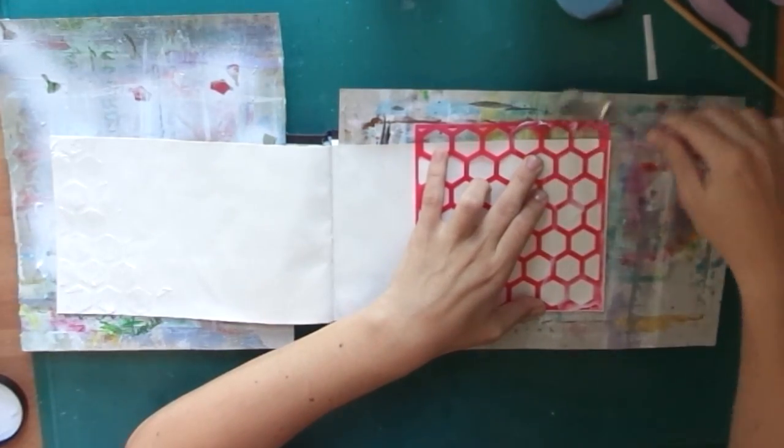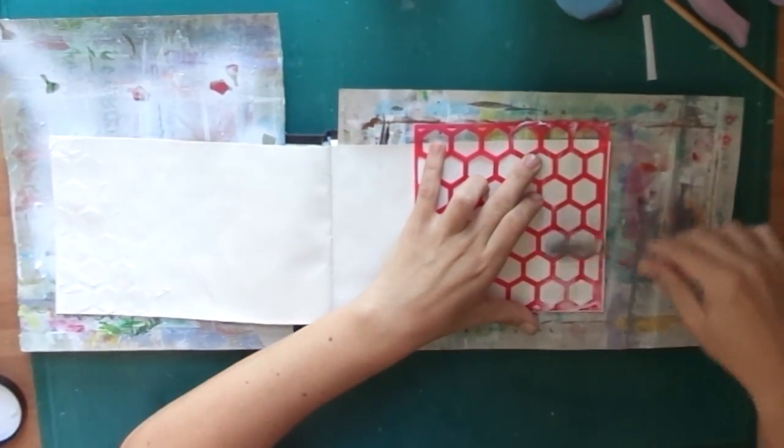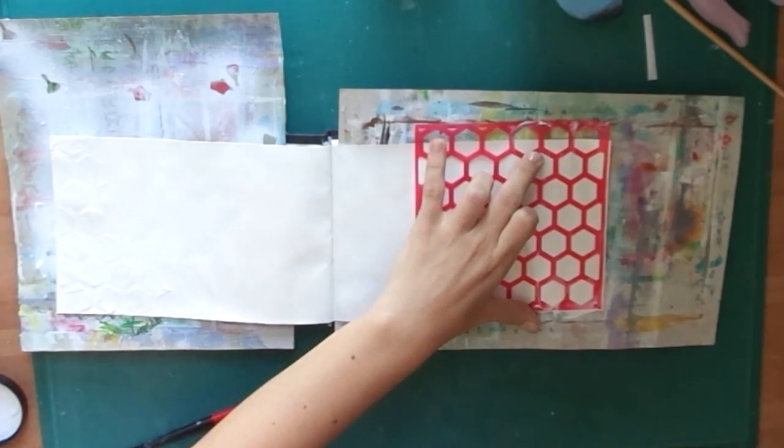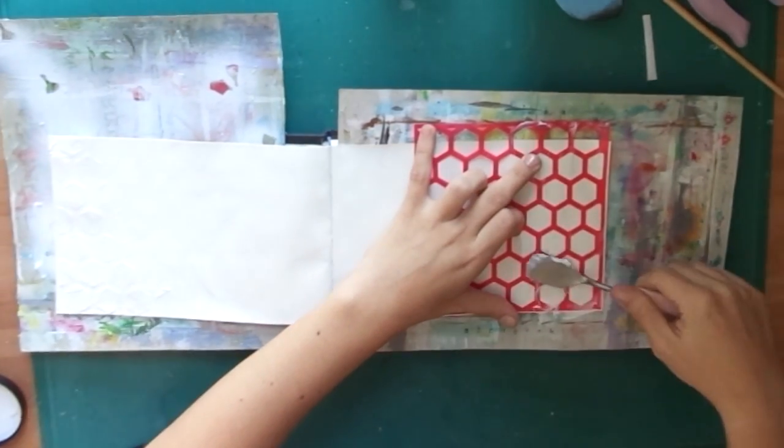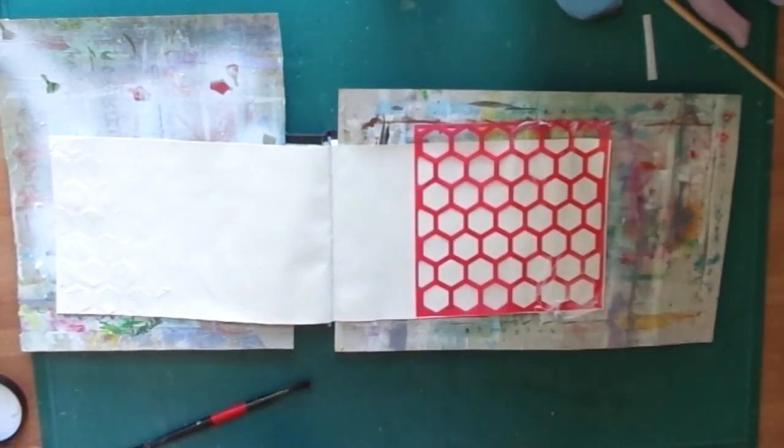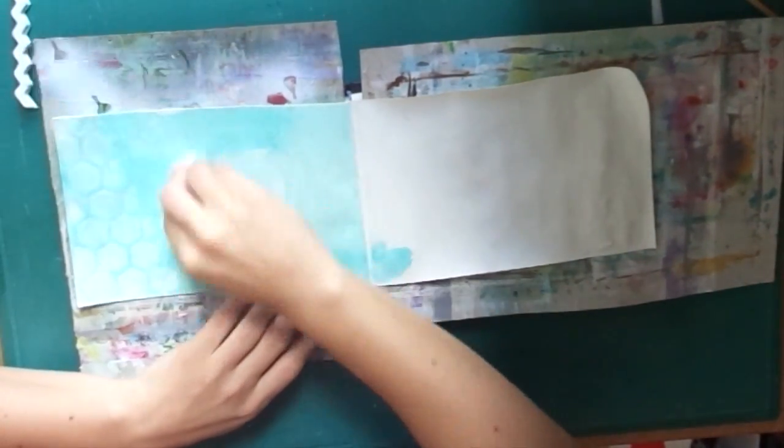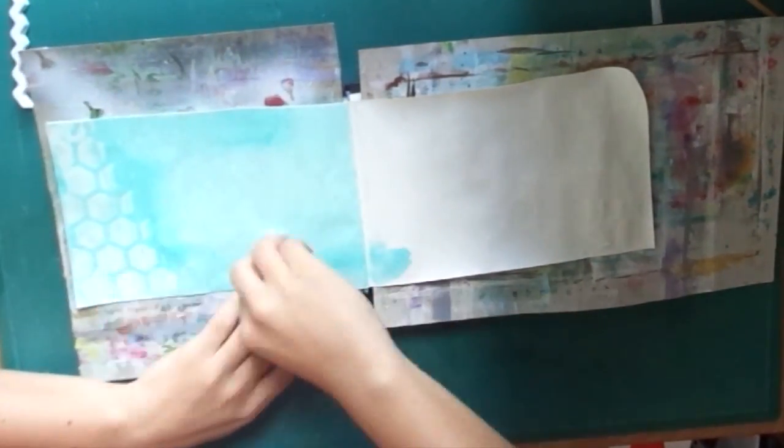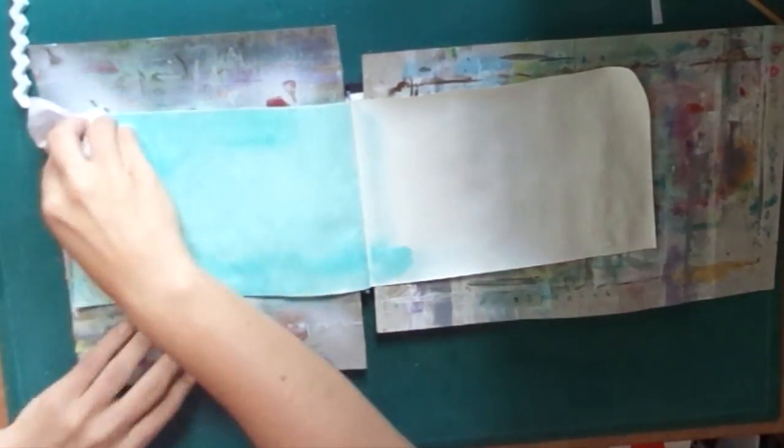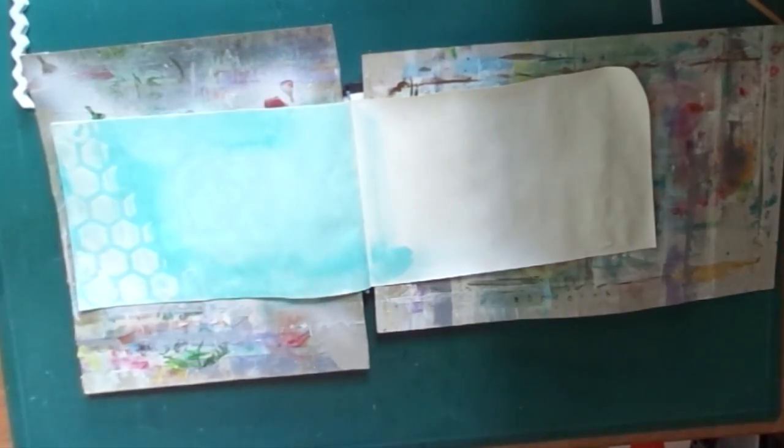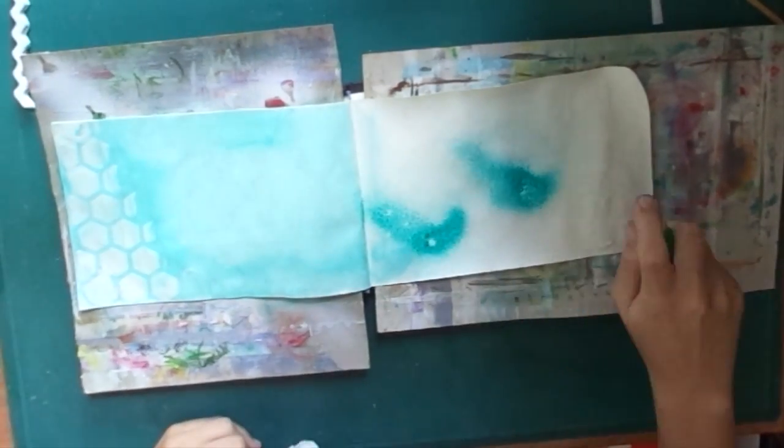I'm using here some glossy texture paste that is transparent, but since the background is white because I used Gesso before, you will see that it gets white while I'm using some inks to color the background.